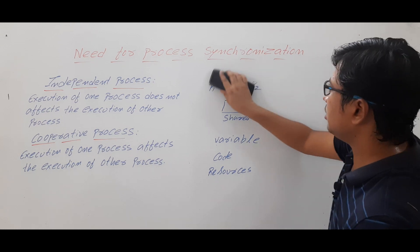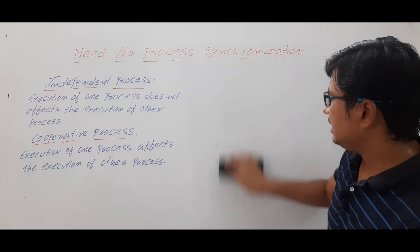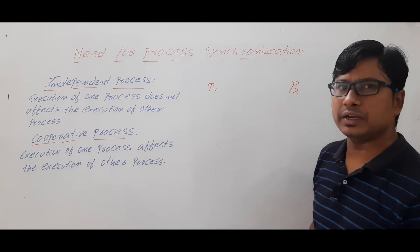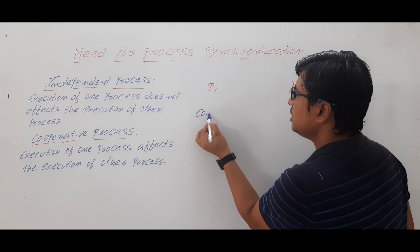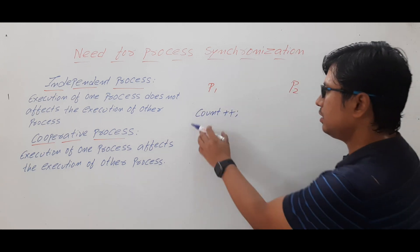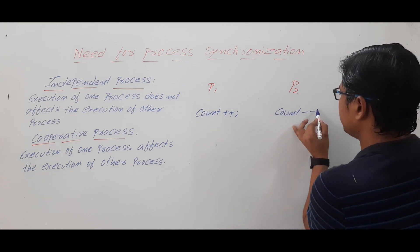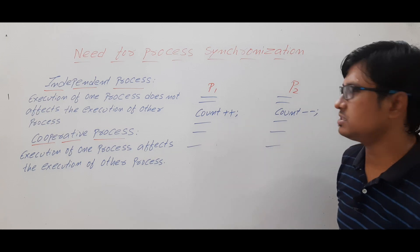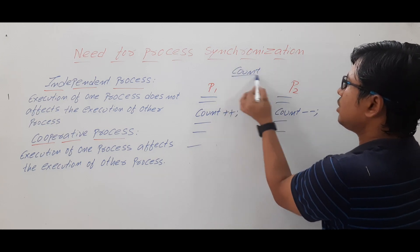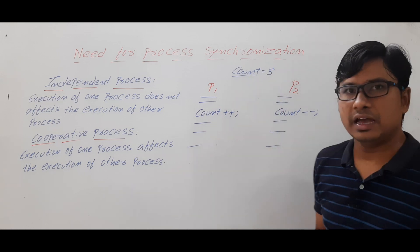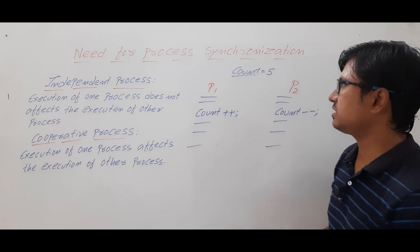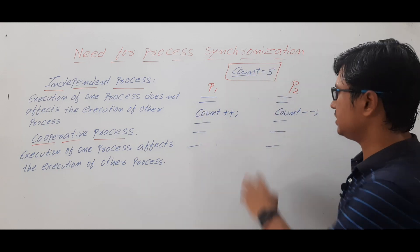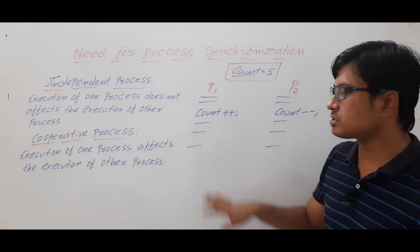Now let me discuss the need for process synchronization in detail with an example. Take two processes P1 and P2. In P1's code there is a 'count++' instruction, and in P2's code there is a 'count--' instruction, along with several other instructions. Count is a shared variable initialized to the value 5. Let me convert count++ into assembly code.